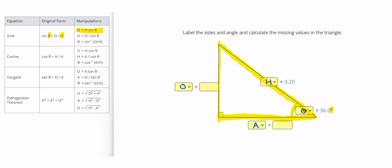So let me go ahead and write that down. So O equals H sine theta, and so I can plug in O equals H, which is 3.20, sine of our angle, which is 36.0 degrees.